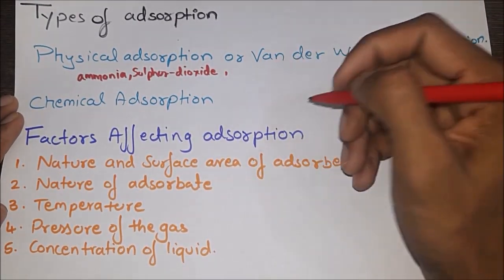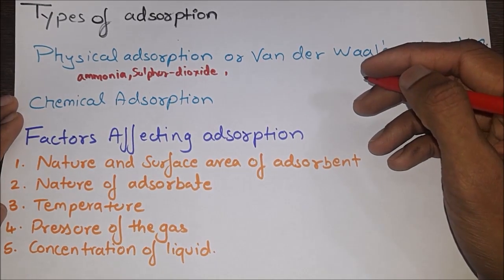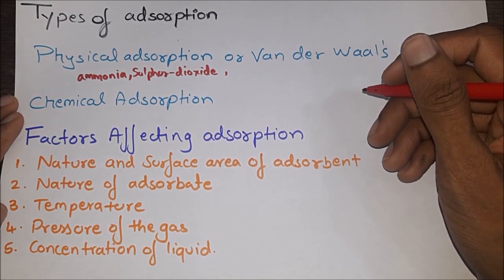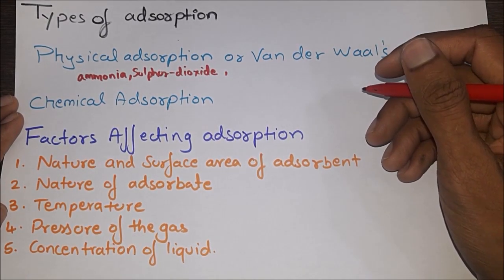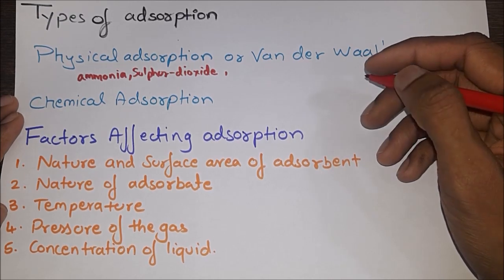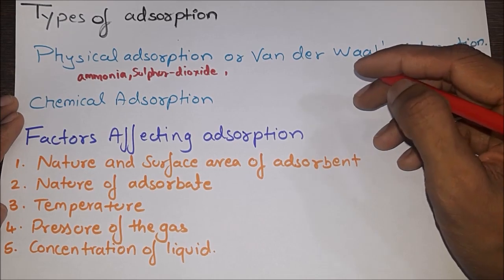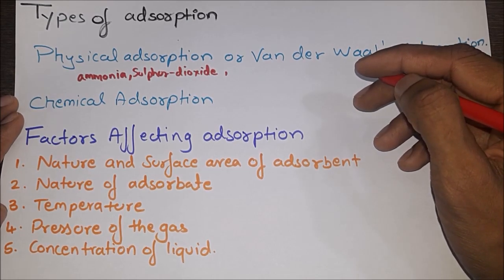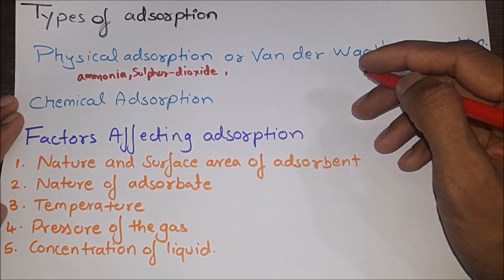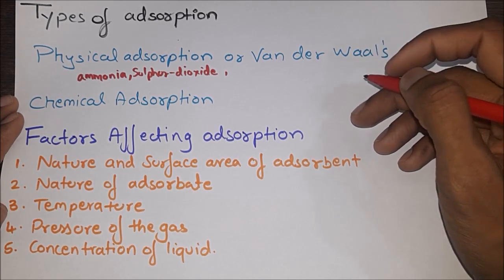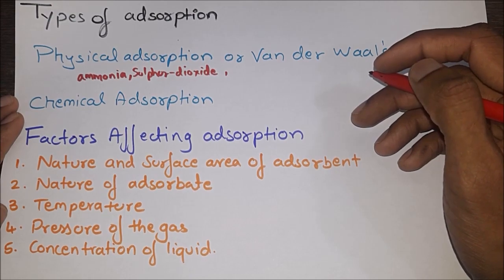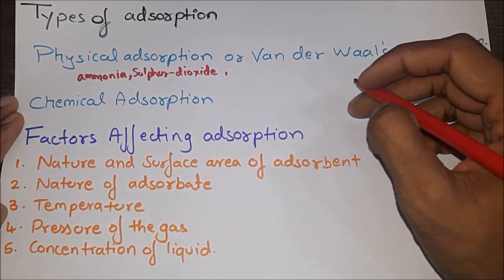For chemical adsorption (chemisorption), it is a type of adsorption in which strong chemical bonds are developed between surface molecules of adsorbent and molecules of adsorbate. It is a specific process, irreversible in nature. The adsorbed layer is uni-molecular only. Rate of adsorption is very low and it has very high heat of adsorption. Example: adsorption of oxygen or carbon dioxide on tungsten.